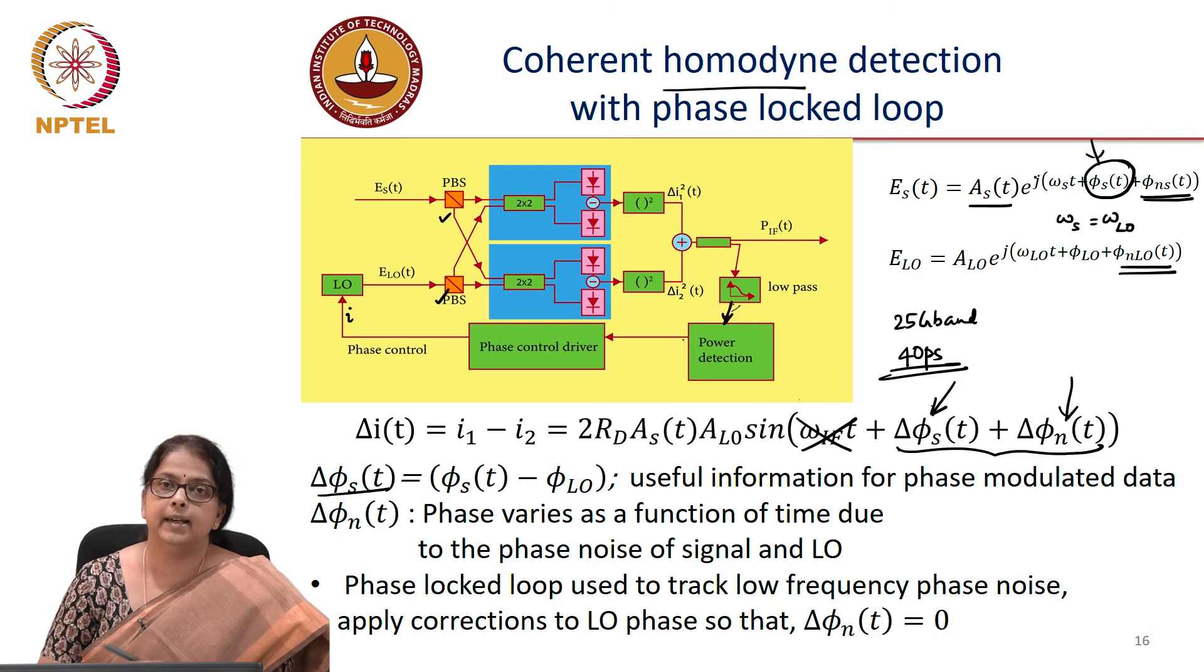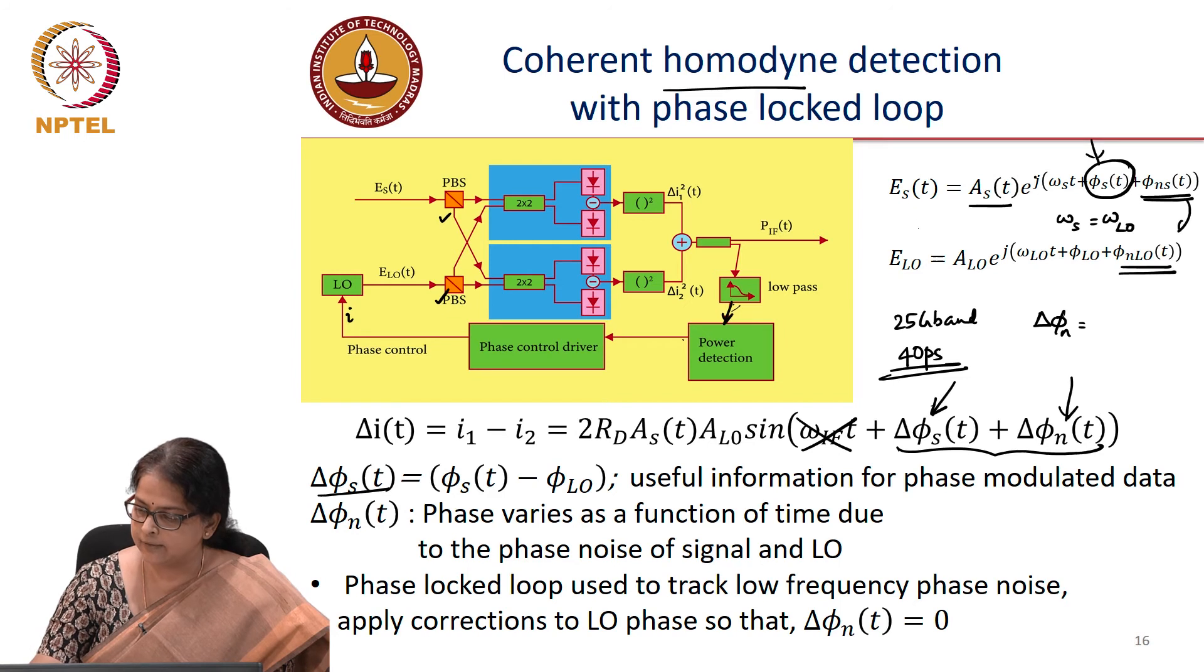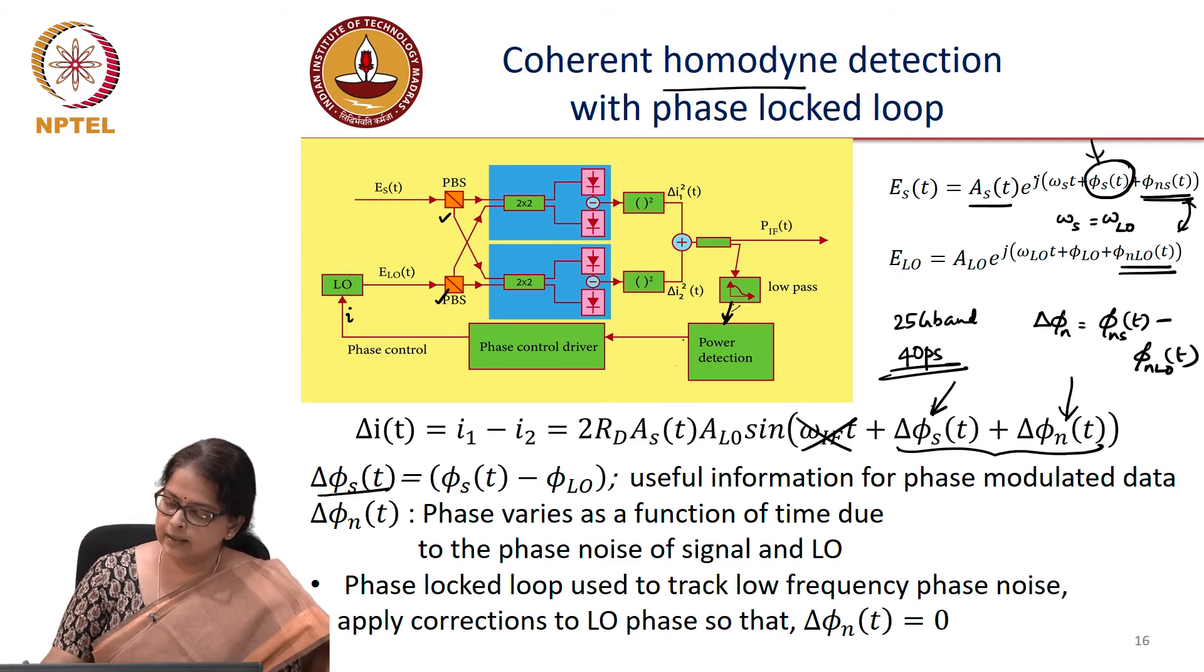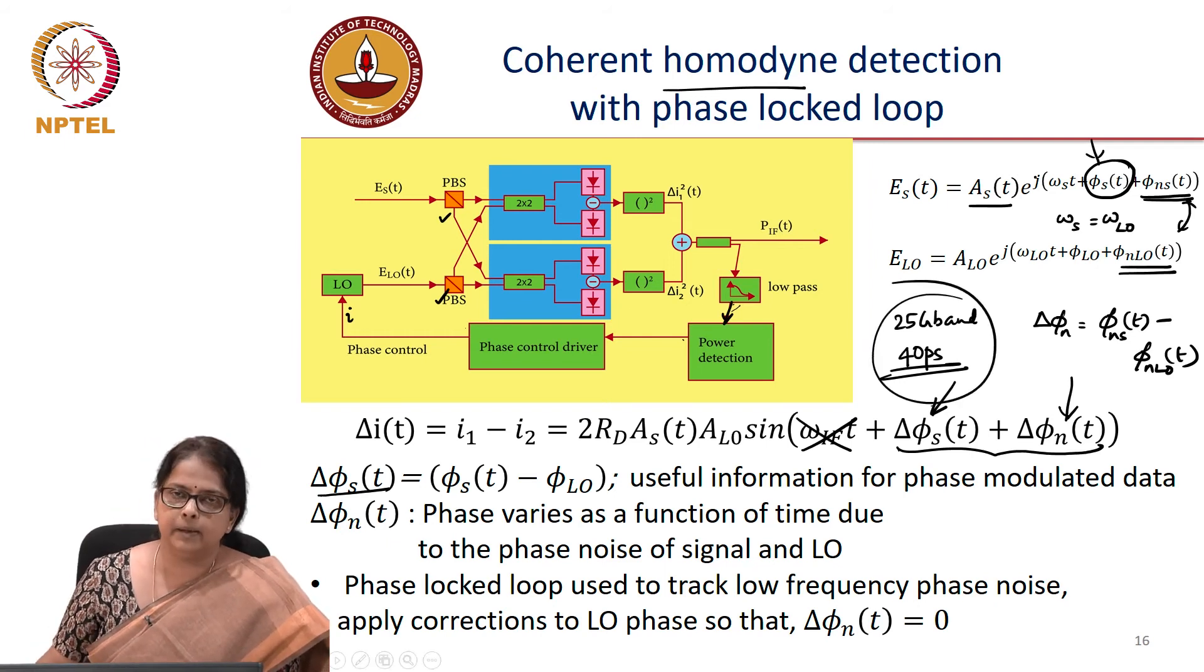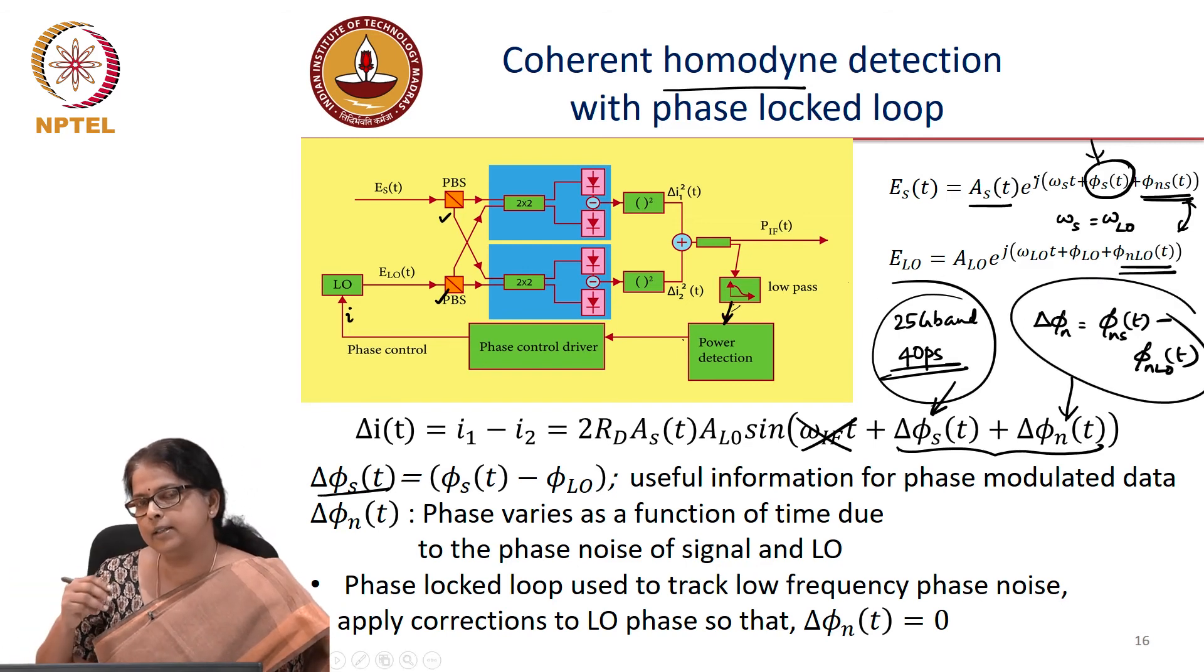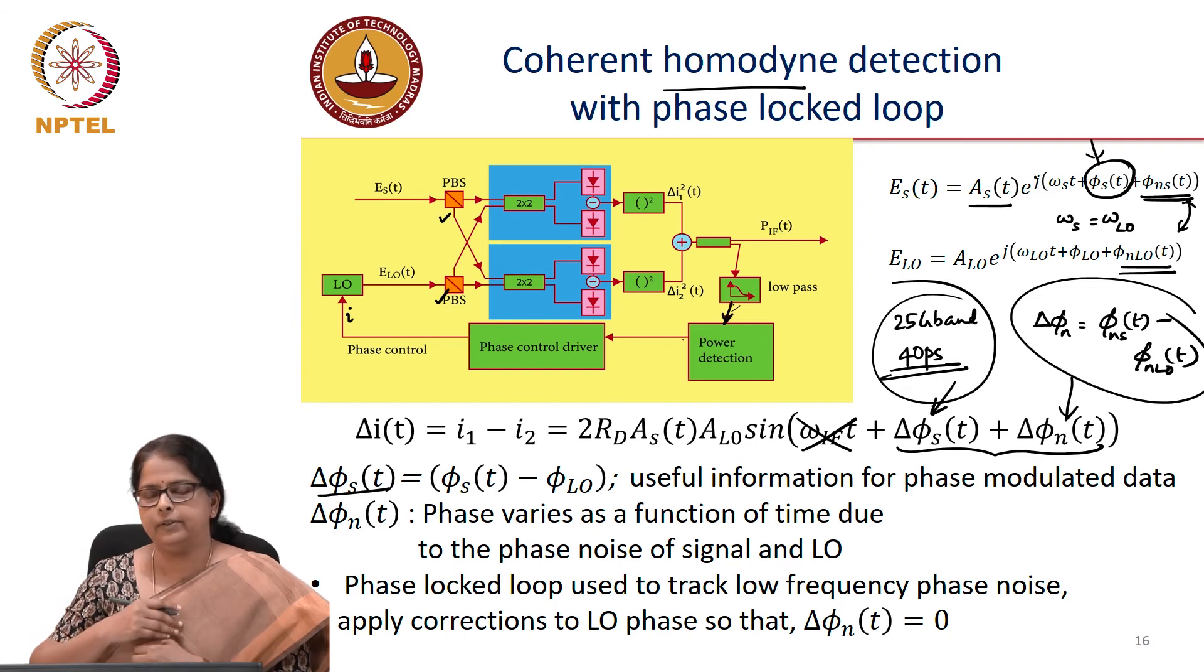Very fast change because your data is getting modulated at that rate. What about phi n, delta phi n? Now delta phi n is something which is the phase difference between the noise terms corresponding to the signal phase, the signal and the local oscillator. Now look at the time scales.